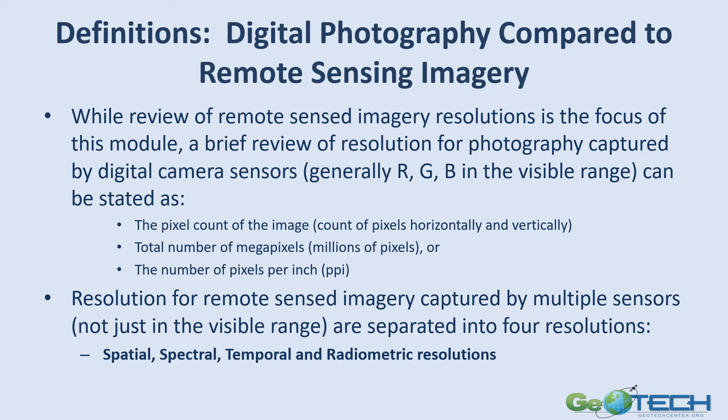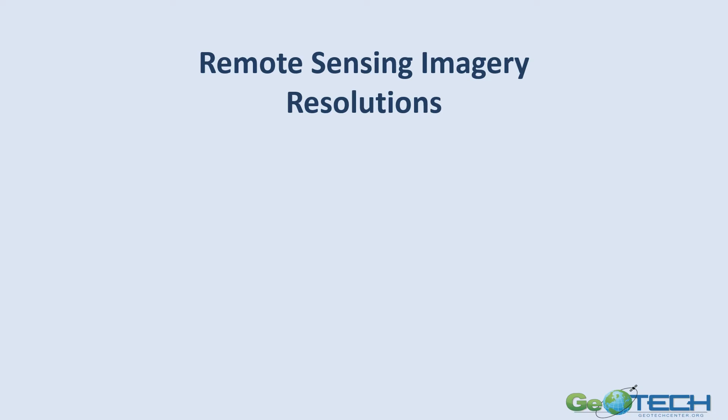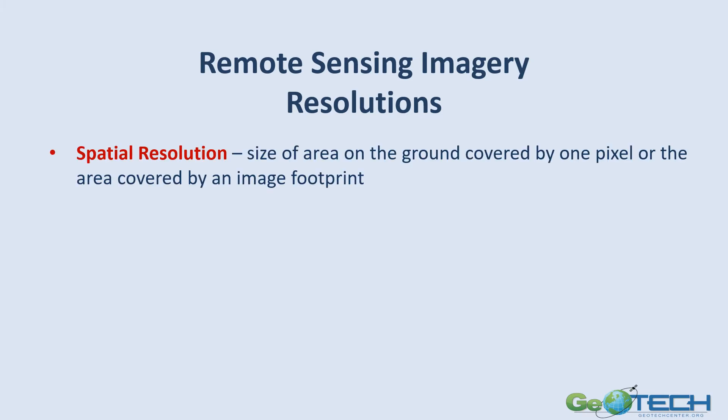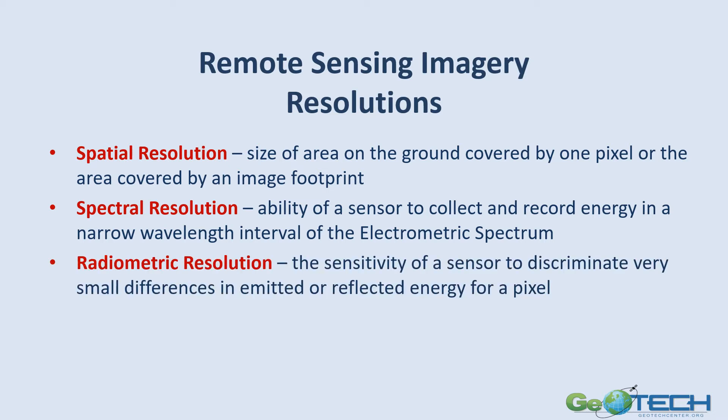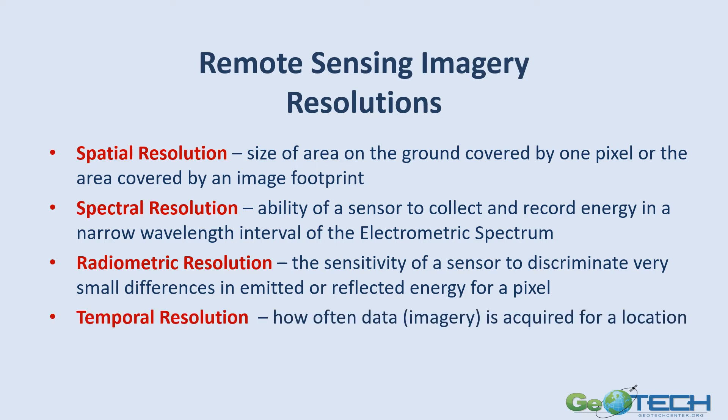This concept module will focus on remote sensing imagery. These are the four types of remote sensing imagery resolutions. The first is spatial resolution — the size of the area on the ground covered by one pixel, or the size of the whole image footprint. Spectral resolution is the ability of the sensor to collect and record energy in a very narrow wavelength of the electromagnetic spectrum. Radiometric resolution is the sensitivity of the sensor to record very small differences in the emitted or reflected energy for each pixel. Temporal resolution is simply how often imagery is acquired for a specific location. We're going to go into each one individually.